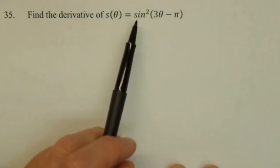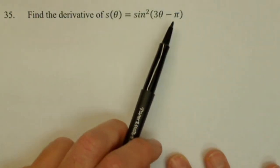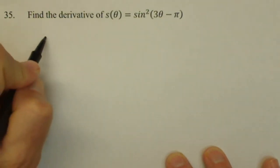So we're going to find the derivative of sine squared of 3 theta minus pi. So we're going to have to apply chain rule a couple times.